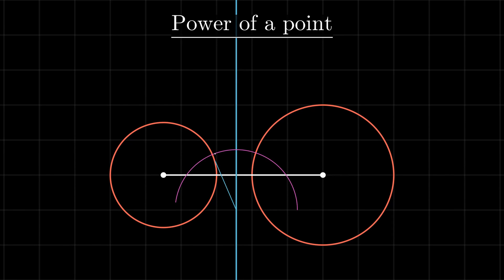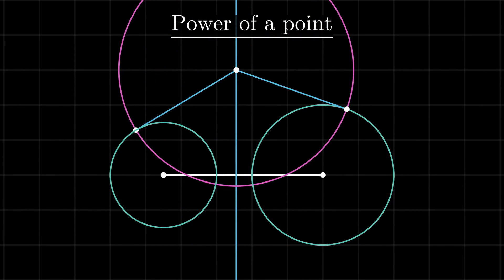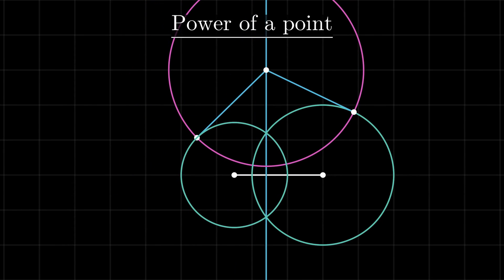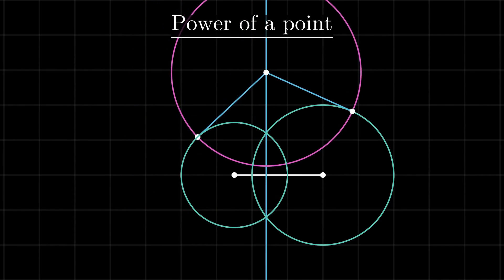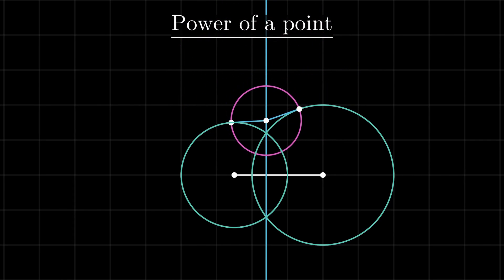The radical axis is interesting because if we draw a circle centered on the axis with radius equal to the tangent's length, an inversion under this circle leaves both circles unchanged. In case the circles intersect and the inversion center falls inside the circles, the inversion just flips the circles along the radical axis.